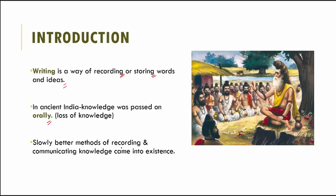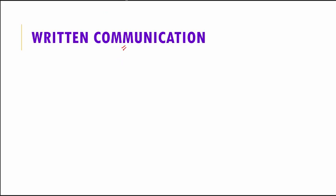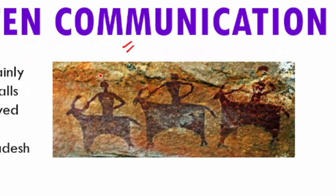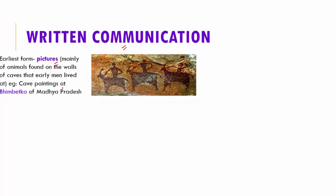Slowly, better methods of recording and communicating knowledge came into existence — written communication. The earliest form of written communication discovered was through pictures, mainly of animals, found on the walls of caves where early men lived. You can see this picture here — it is a cave painting from Bhimbetka in Madhya Pradesh, showing paintings of different animals like cows and sheep.